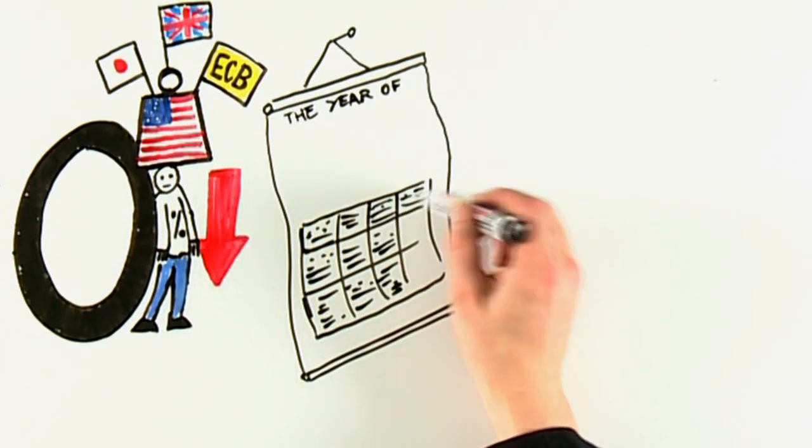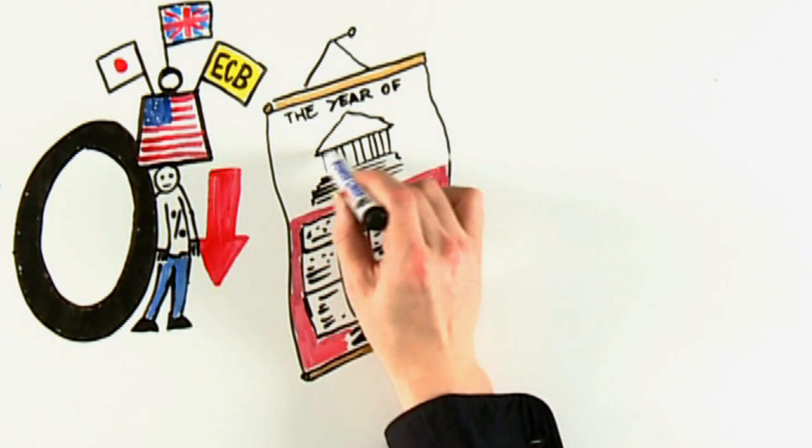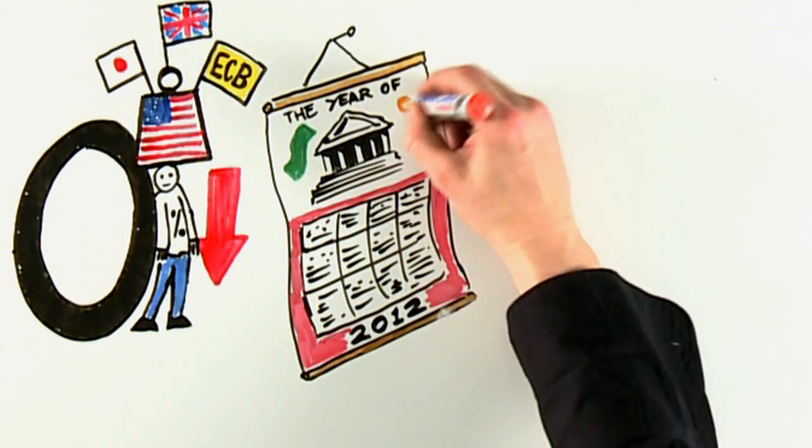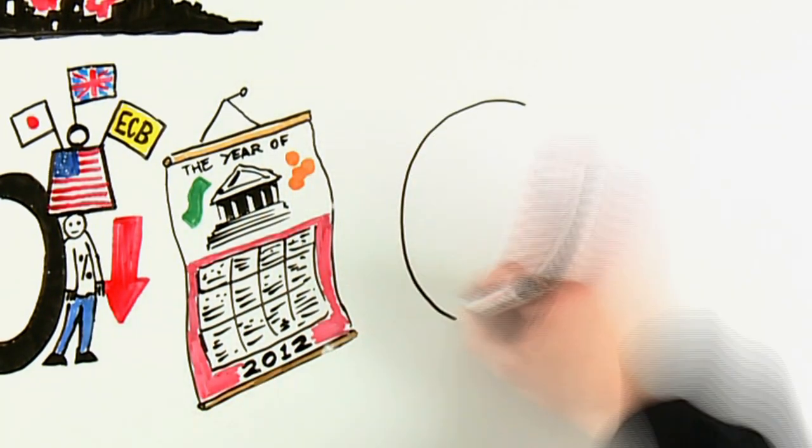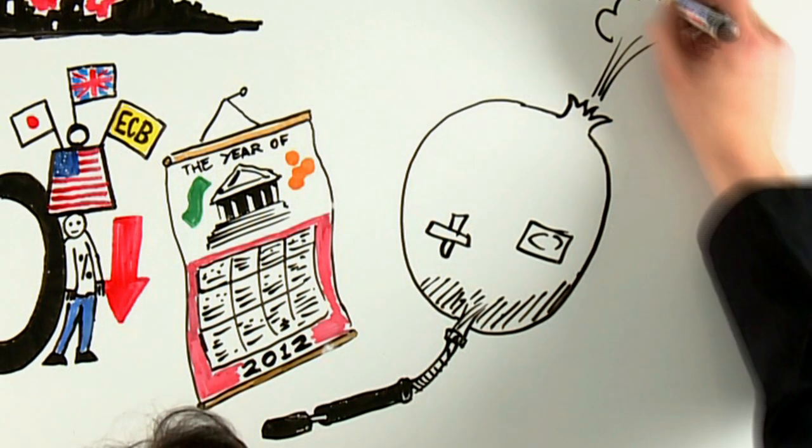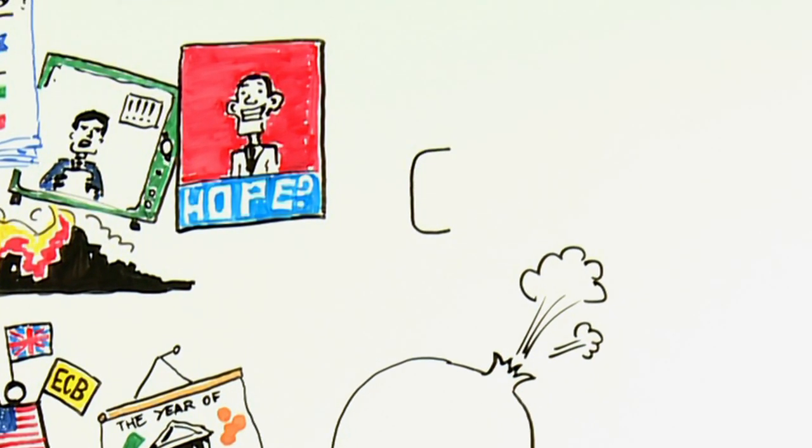Now in China, we may well refer to this year as the year of the dragon. But in the rest of the world, we could definitely refer to it as the year of the central bank. Because central banks are injecting liquidity, trying to reflate a bubble in order to avoid the consequences of the bursting of a bubble in the first place.